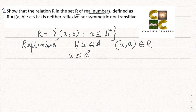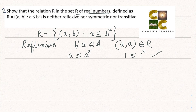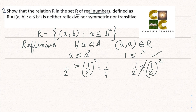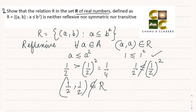Suppose I take a = 1: 1 ≤ 1² = 1, which is true. If I take a = 2: 2 ≤ 4, also true. But if I take a = ½: ½ ≤ (½)² = ¼? No — ½ is actually greater than ¼. So ½ is not less than or equal to ½², meaning (½, ½) does not belong to this relation. Therefore the relation is not reflexive.